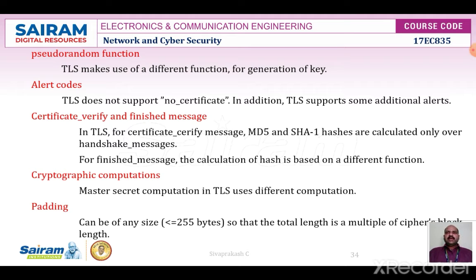The next difference is client certificate type. TLS defines the following certificate types: RSA sign, DSS sign, RSA fixed DH, and DSS fixed DH. SSL 3 additionally uses RSA ephemeral DH, DSS ephemeral DH, and Fortezza KEA. Ephemeral Diffie-Hellman involves signing the Diffie-Hellman parameters with either RSA or DSS. For TLS, RSA sign and DSS sign types are used for this function, and a separate signing type is not needed to sign Diffie-Hellman parameters. Therefore, TLS does not include the Fortezza scheme in the client certificate type.